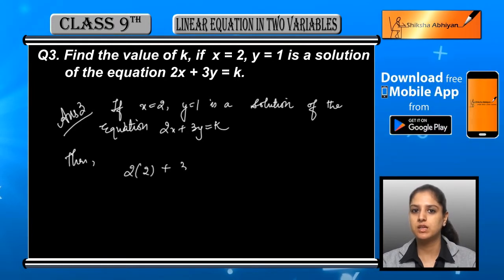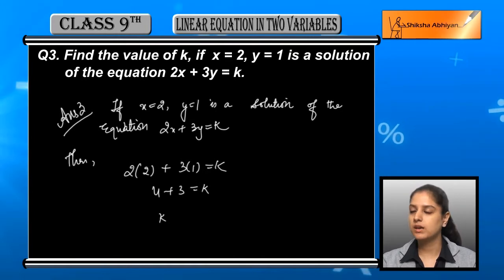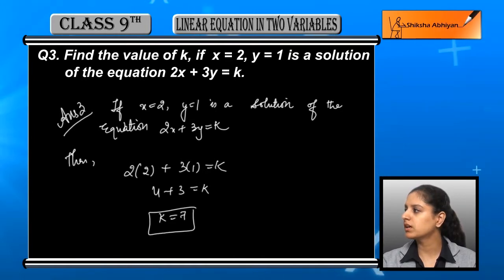you will get 2 × 2 + 3 × 1 = k. That is 4 + 3 = k. So k's value we got is 7.